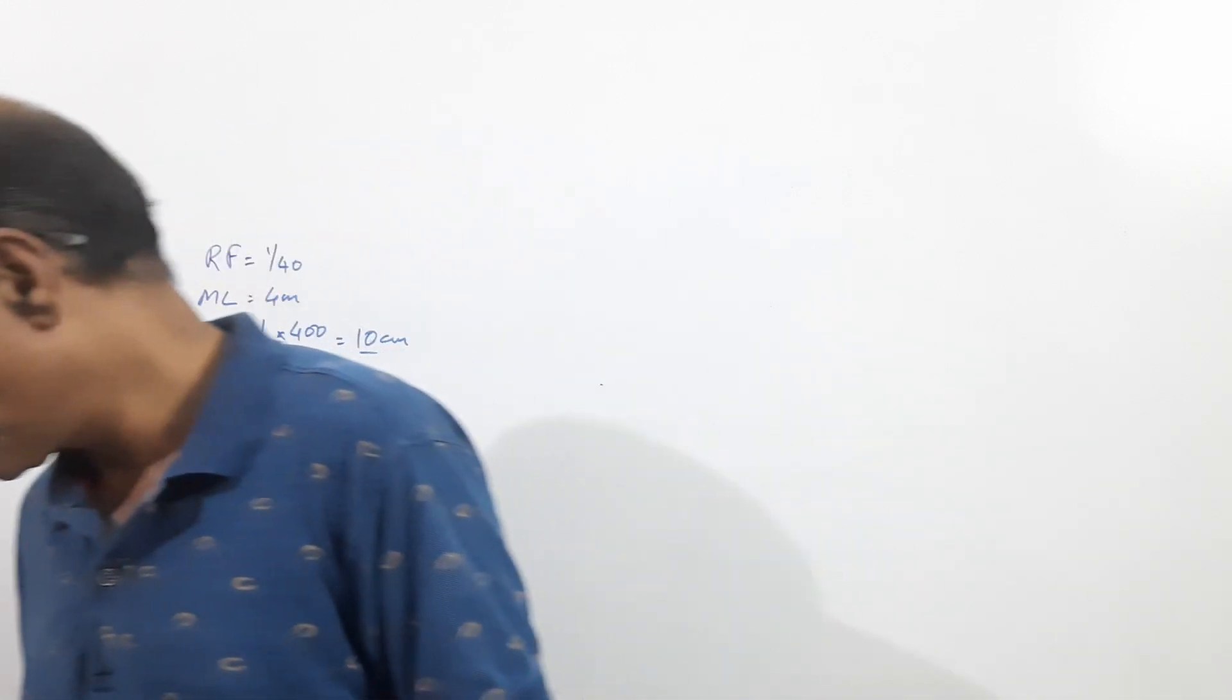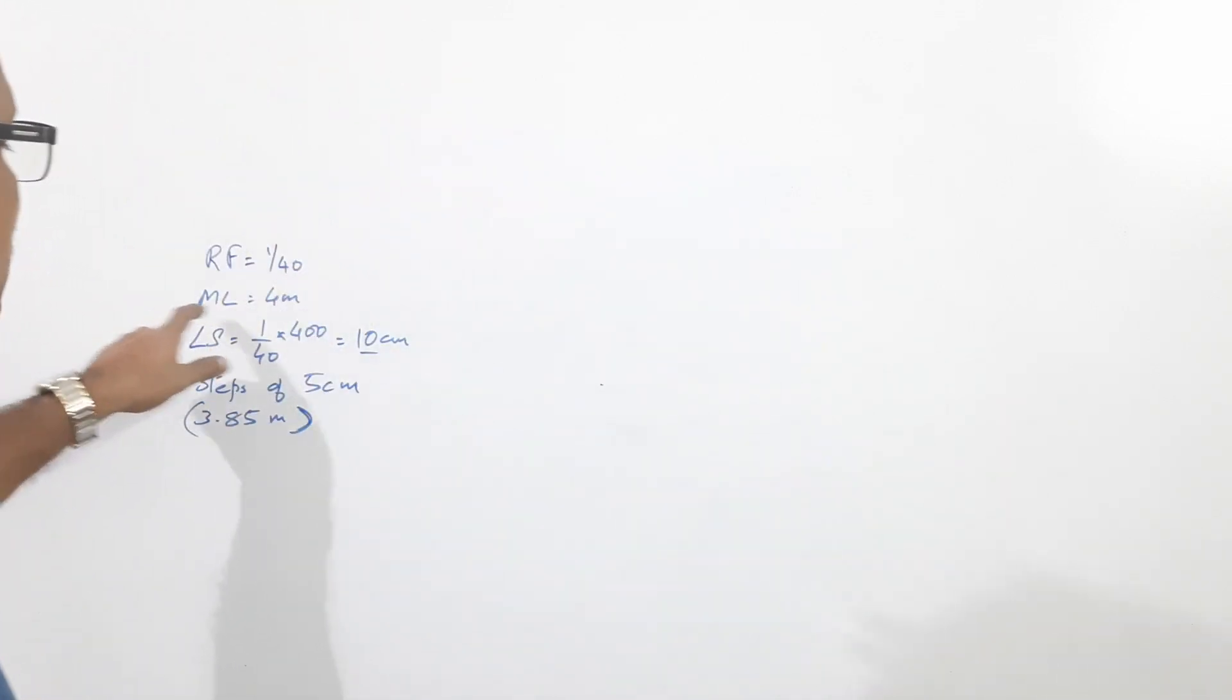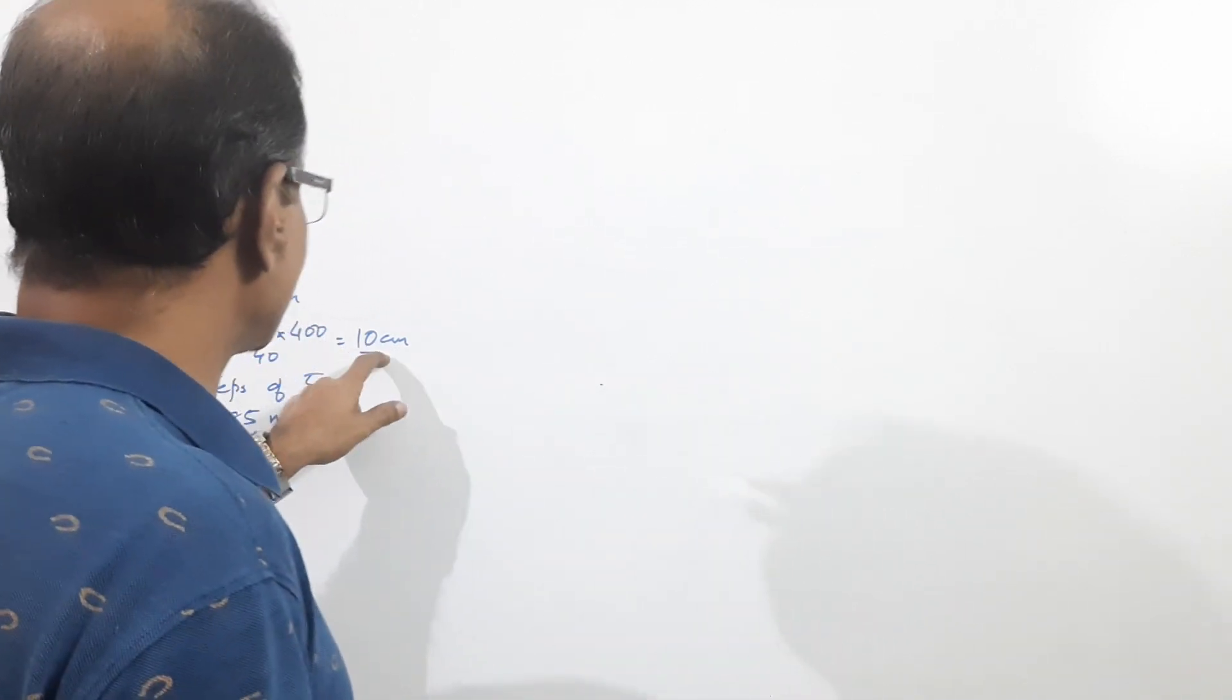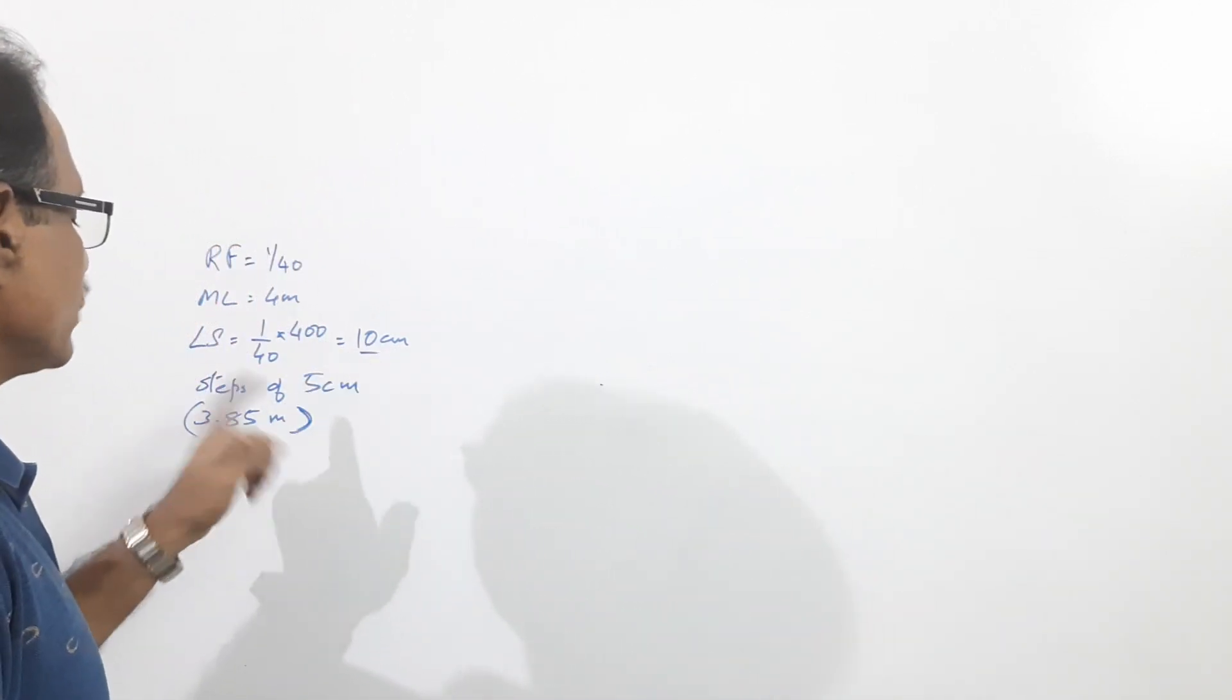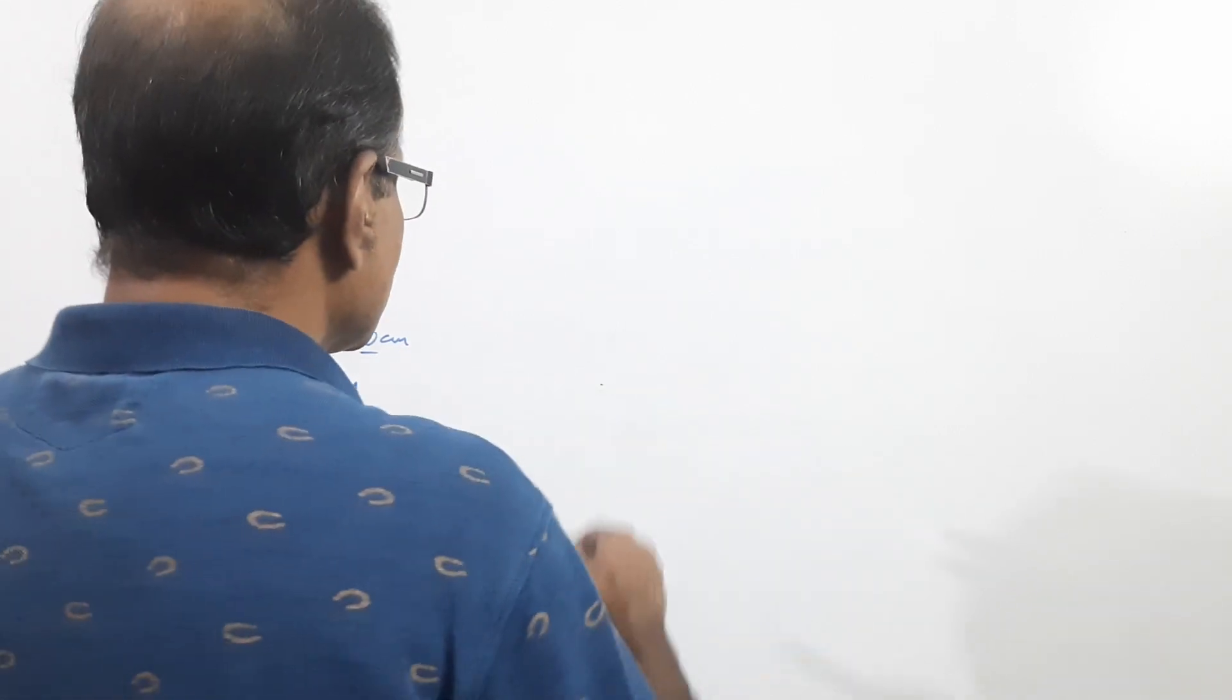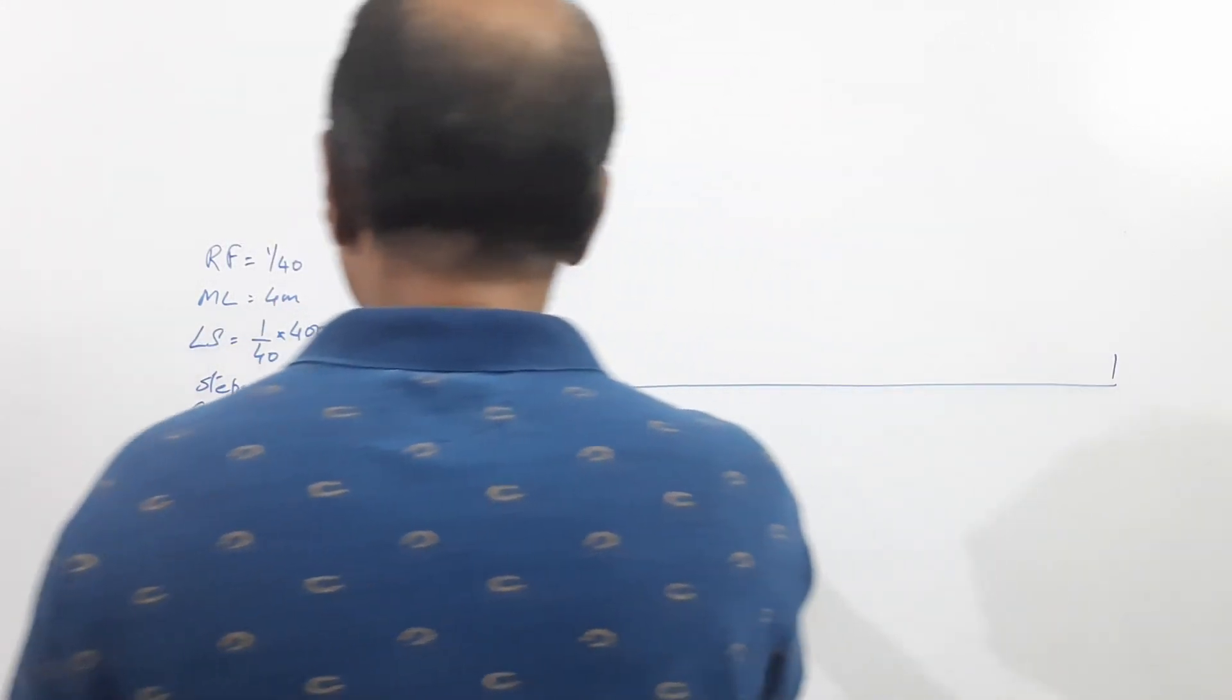RF is 1 by 40, max length is 4 meters. Therefore, length of scale is 1 by 40 into 400 equals 10 centimeters. The least count is 5 centimeters and you have to show 3.85 meters on it. Construct the main scale. What is the length? Length is 10 centimeters.